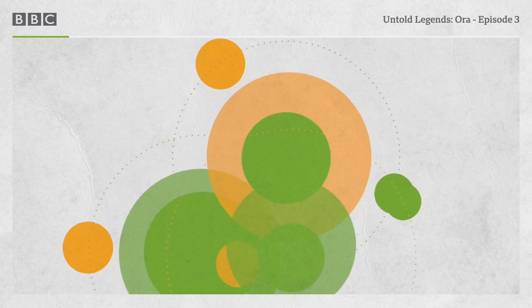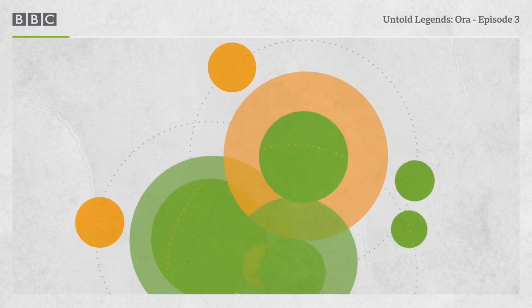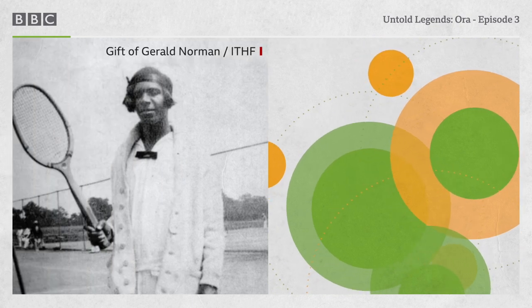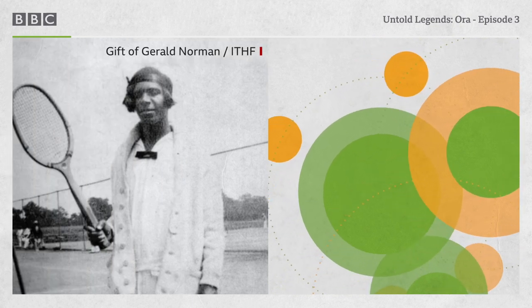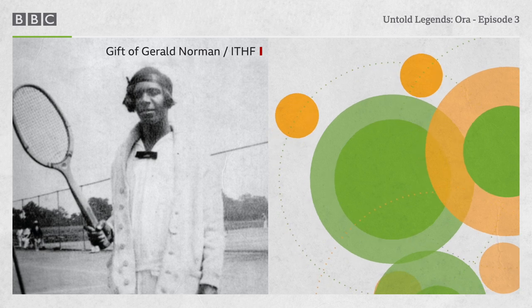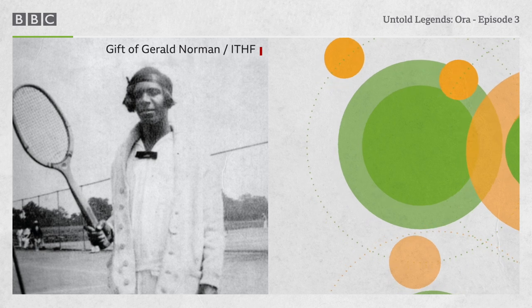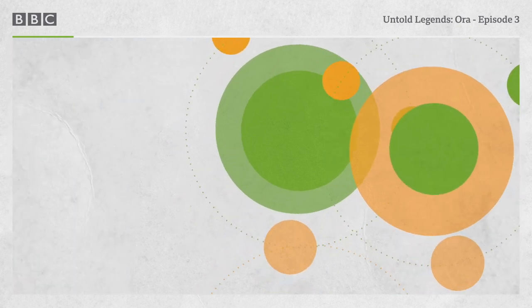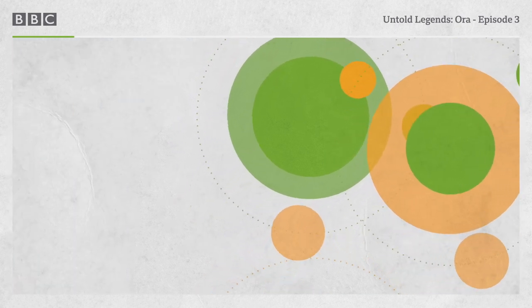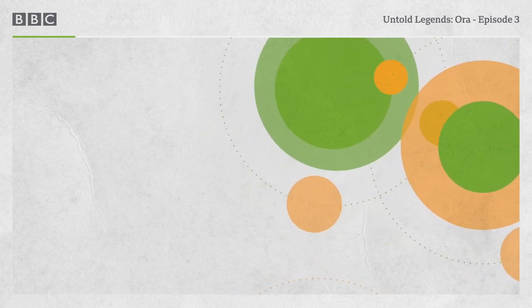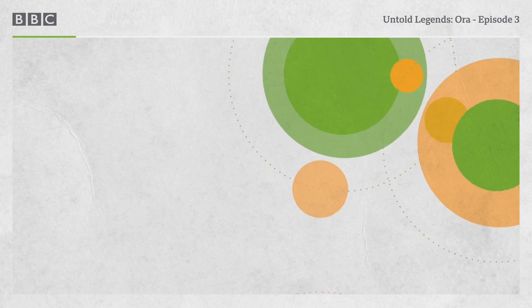And to our right, a newcomer, slightly older than Izzy, an upstart. A certain Miss Ora Washington of Philadelphia. She's come a long way since her first lesson at the YWCA a few years ago. That's her trademark grip on the racket, nearly halfway up the handle. Nice serve! Advantage, Miss Washington.